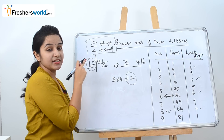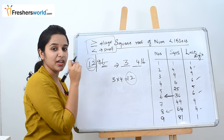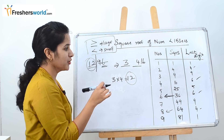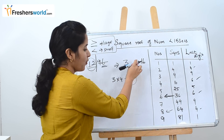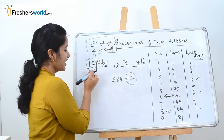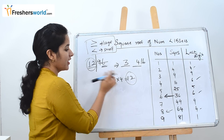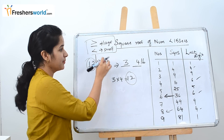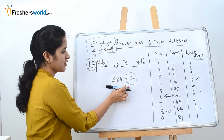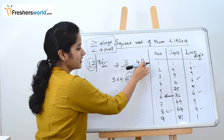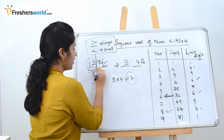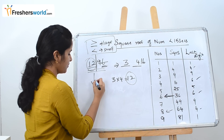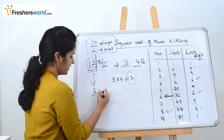For example, if it were 11 here, then 11 is less than 12, so you would take 4. But in this case both values are 12 — they are equal. As per our concept, when they are equal we take the large number. So the square root of 1296 is 36.